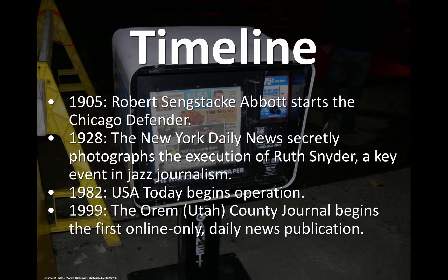In 1982, USA Today began operation. At the time it was controversial — it was called the McNewspaper or McDonald's of newspapers. It was fast food, high caloric value, and was denigrated for a long time, but has now become a national newspaper by the Gannett Corporation. And in 1999, the Orem, Utah County Journal began the first online-only daily news publication.